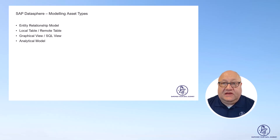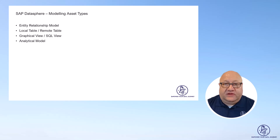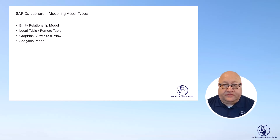Modeling assets in SAP Datasphere are fundamental building blocks that help you structure your data. Think of them as the backbone of your data models. There are several different asset types in SAP Datasphere, each designed for a very specific purpose. Today we're going to focus on the five core elements: the entity relationship model, local and remote tables, graphical views, SQL views, and the analytical model. Basically, we're focusing on the assets that you create in the data builder.